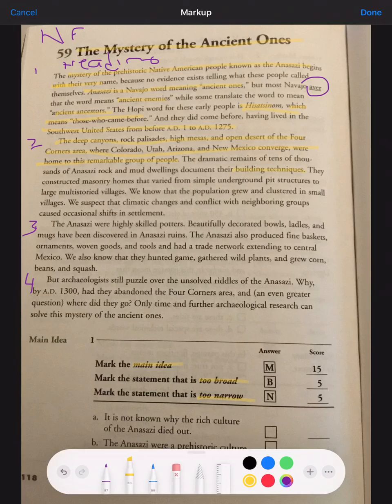The Anasazi were highly skilled potters. Beautifully decorated bowls, ladles, and mugs have been discovered in Anasazi ruins. The Anasazi also produced fine baskets, ornaments, weaving goods, and tools, and had a trade network extending to central Mexico. We also know that they hunted game, gathered wild plants, and grew corn, beans, and squash.